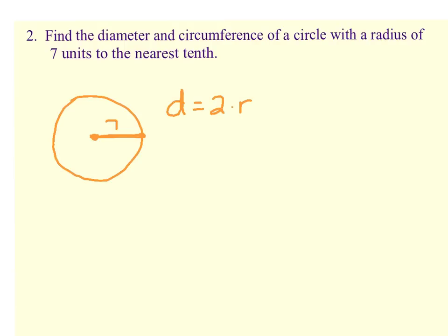So diameter is equal to 2 times the radius. So in this case, the diameter is 14 units. We'll just use U for units.